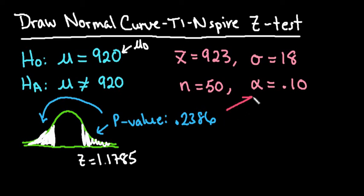And now I'm going to compare that to alpha. So we always compare these two values together. We're going to look at our p-value and we're going to look at our alpha. And since our p-value of 0.2386 is greater than alpha of 0.10, we would fail to reject our null hypothesis.